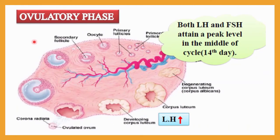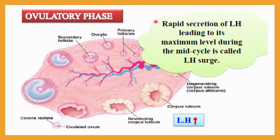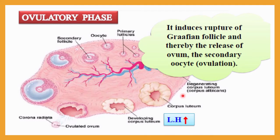The ovulatory phase is when the ovary is ready to release the ovum. During this phase, both LH and FSH attain a peak level at the middle of the cycle, on day 14. There is a rapid surge of LH — called the LH surge — which leads to LH reaching its maximum level during mid-cycle.